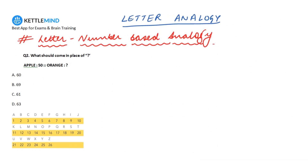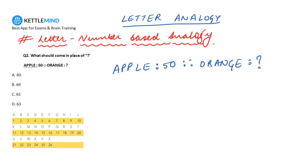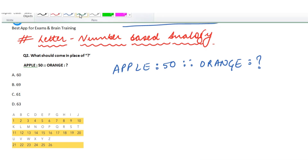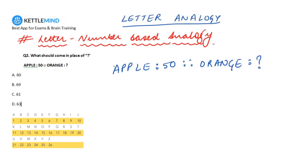Moving on to the next question: Apple is related to 50, and orange is related to what on the same lines. An important point here is that in letter-number based analogies, you will find a lot of questions based on the addition of letter values making it equal to the number part. The letters of the word — their values as per the alphanumeric series — are summed to give the number on the right-hand side.